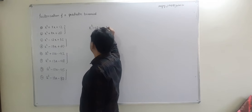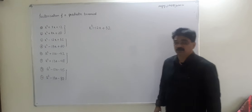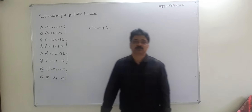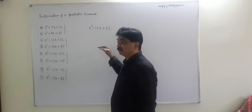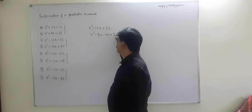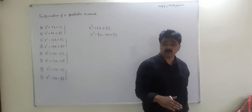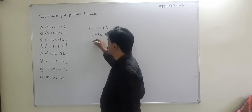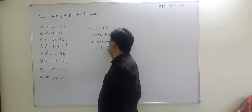For x² - 12x + 32: c is positive but the middle term is negative. Two numbers whose product is 32 and whose sum is 12 — that's 8 and 4. Since c is positive, both numbers have the same sign; since the middle term is negative, both are minus. So: x² - 8x - 4x + 32 = x(x - 8) - 4(x - 8) = (x - 8)(x - 4).